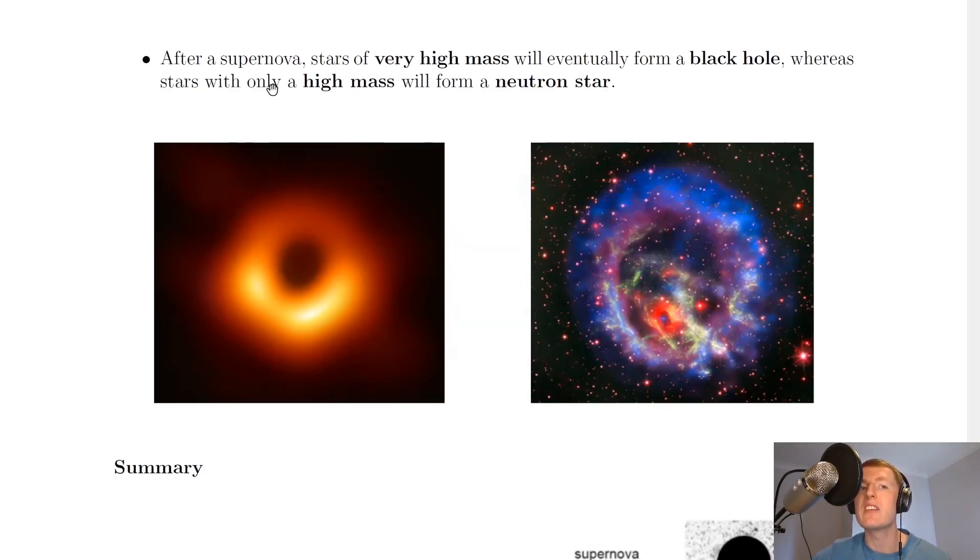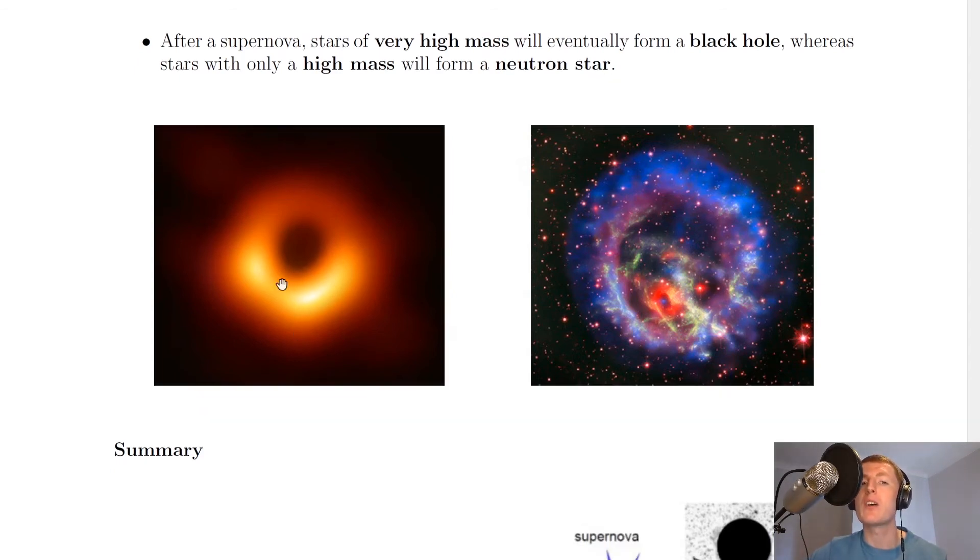Lastly, it says after a supernova, stars of very high mass will eventually form a black hole, whereas stars with only a high mass will form a neutron star. Here's a picture of a black hole, which was the first properly detected image. And then we've also got a picture of a neutron star.